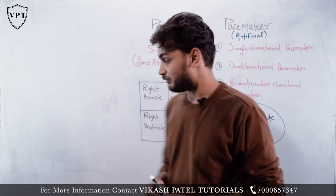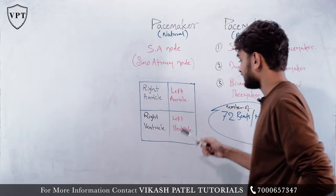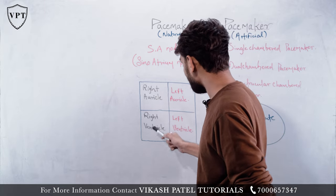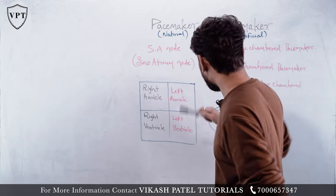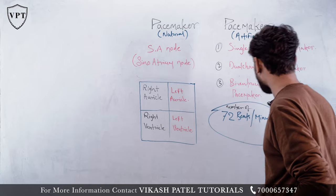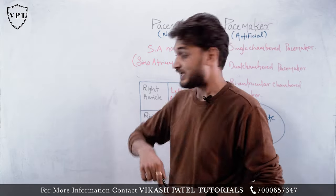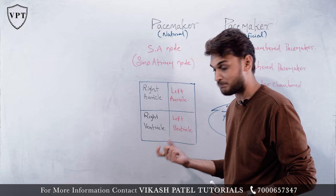In the case of a person who is facing a problem in both the right ventricle and the left ventricle, a biventricular chambered pacemaker is used to address issues affecting both lower chambers of the heart.